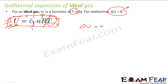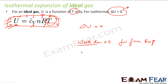Please note: the change in internal energy for an isothermal process, where temperature is constant, is zero. There will be no change in internal energy. So if temperature is constant, the internal energy change is zero.